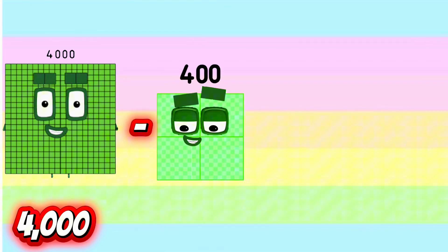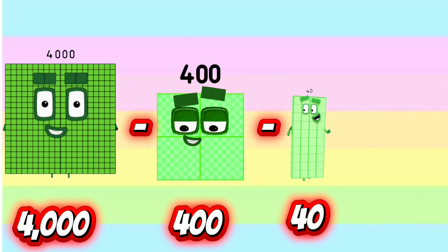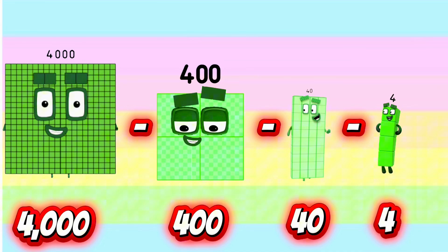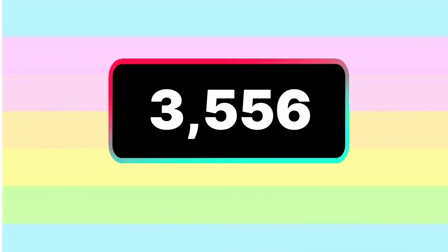4,000 minus 400 minus 40 minus 4 equals 3,556.